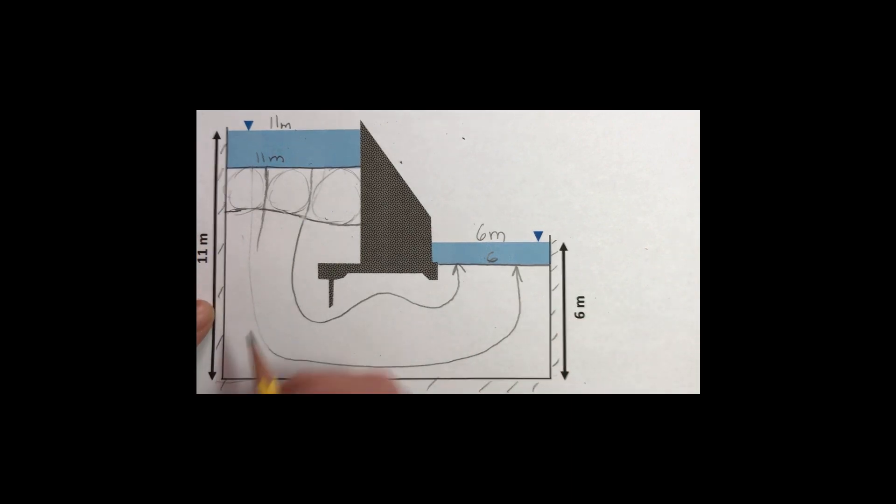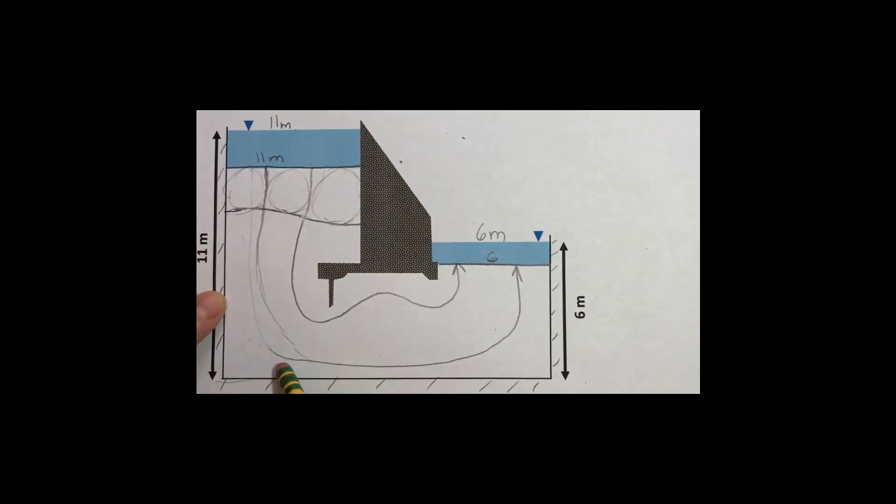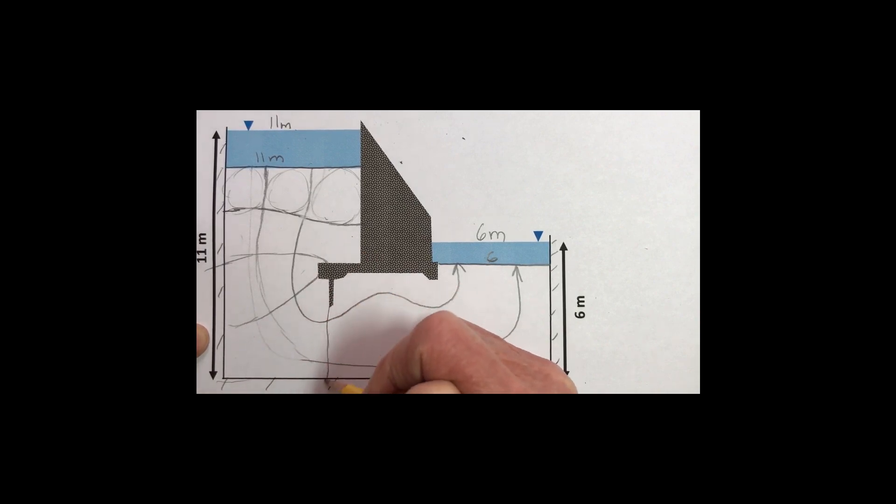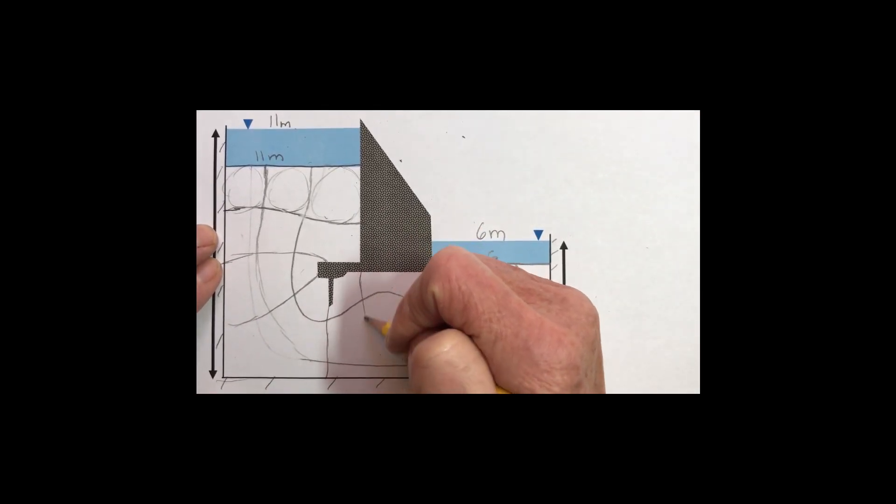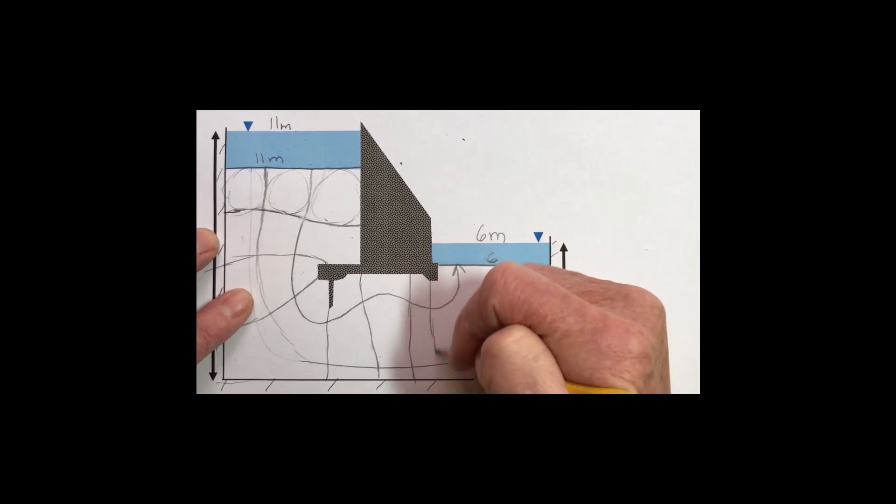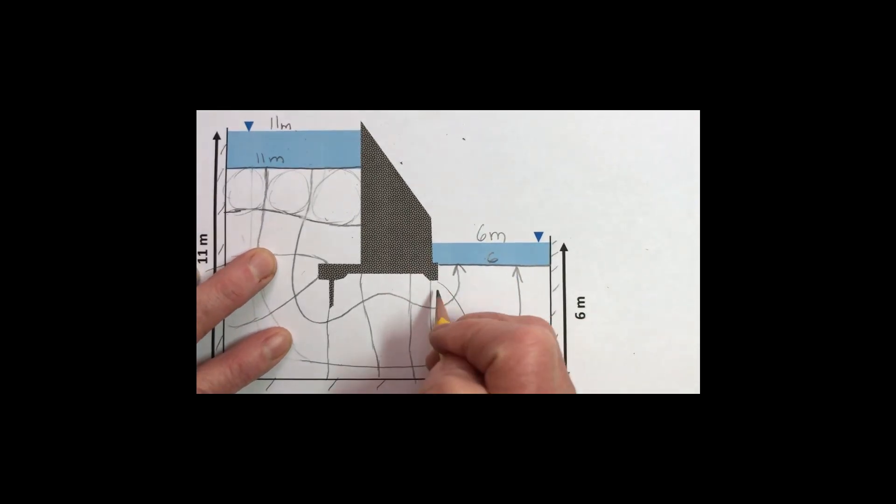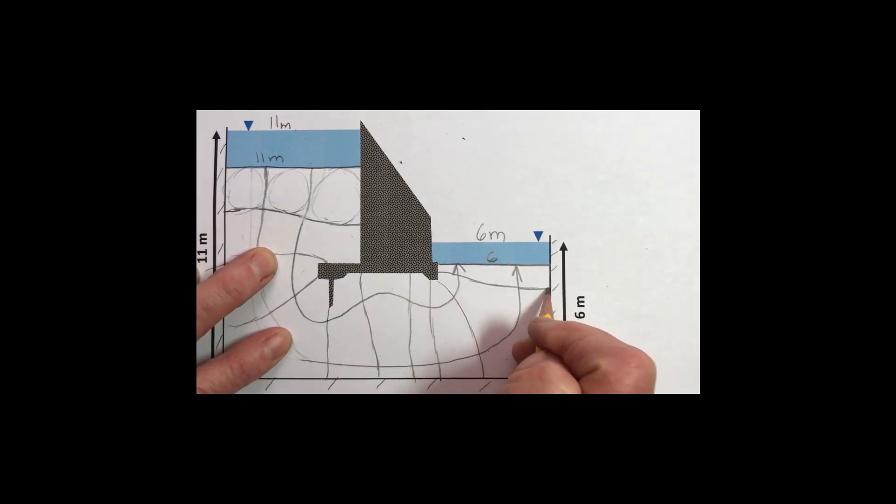Let me continue to put equipotential lines in here. A lot of times once you get the general idea of which way flow's going it's not a bad idea to go ahead and put in some equipotential lines and not worry too much about how they look. Get them in there and then stop, sit back.